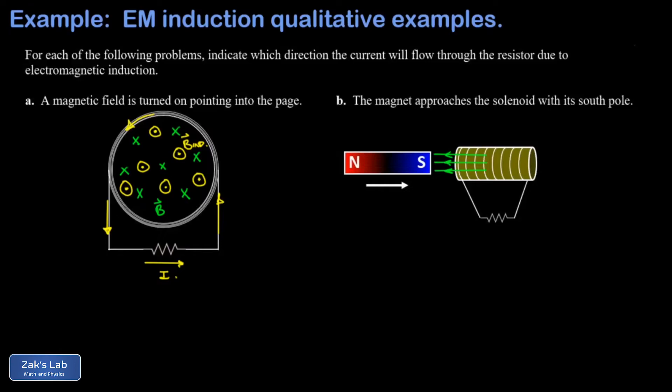So B induced points to the right there, and then we have to think about which way does current flow in this solenoid in order to produce rightward magnetic field through its interior. So again, we use our right-hand rule for Ampere's law.